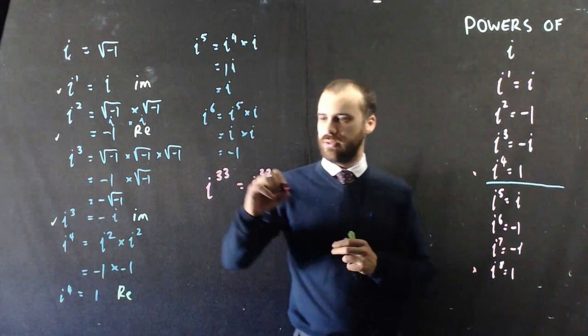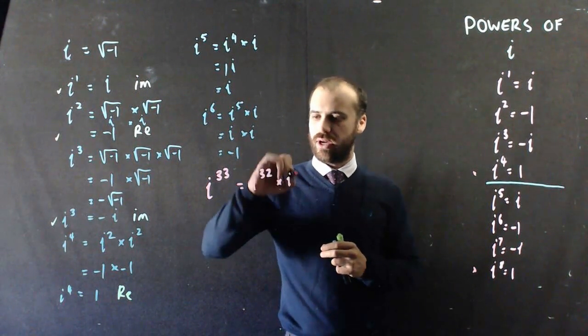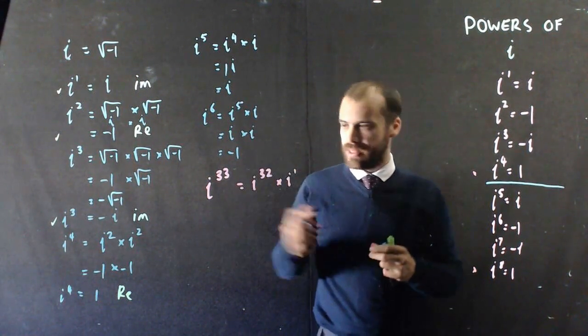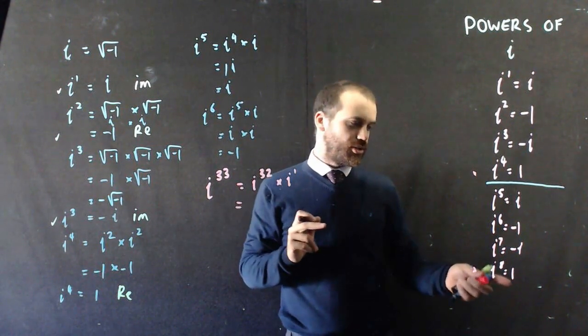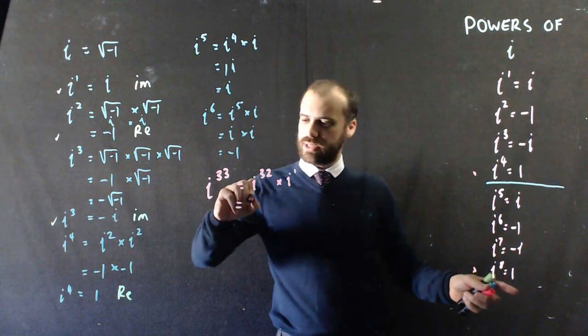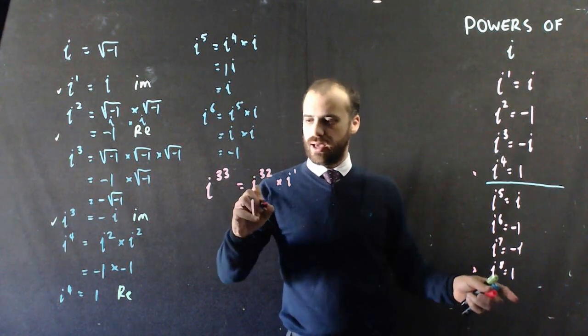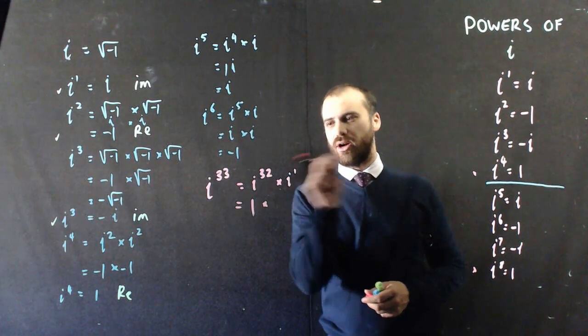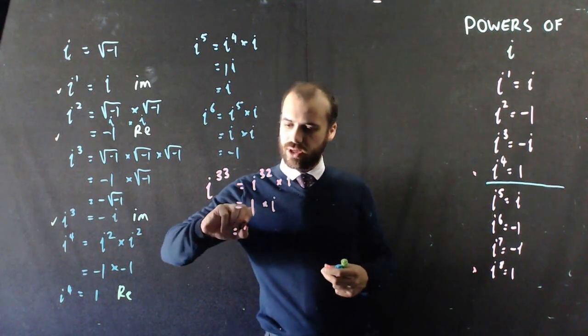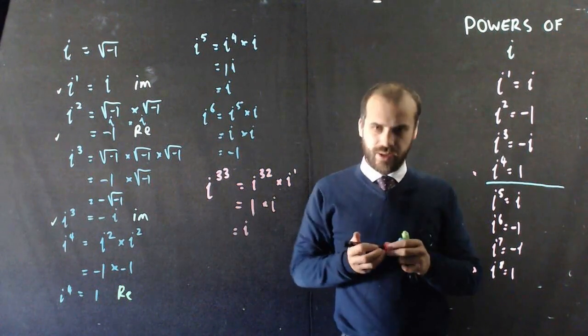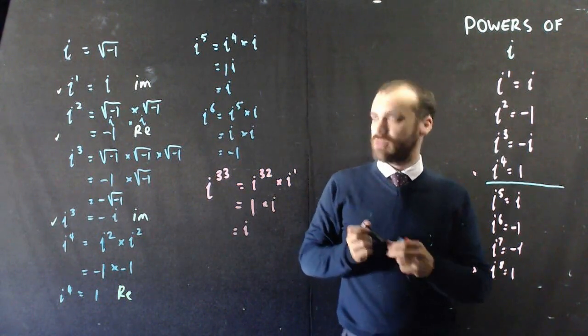In this case, i to the 32 times i to the 1. Now, I can ignore i to the 32, because i to the 32 is just a multiple of 4, so it's actually just going to be the number 1. And then all I need to consider is this part here, i to the 1. Well, i to the 1 is just i. 1 times i is i. And just to drive home the point,